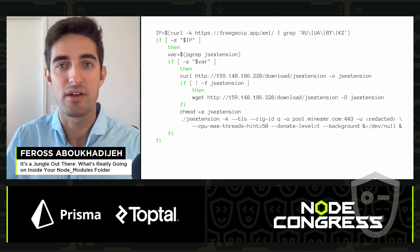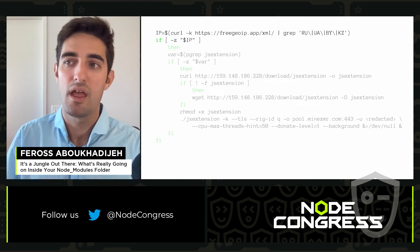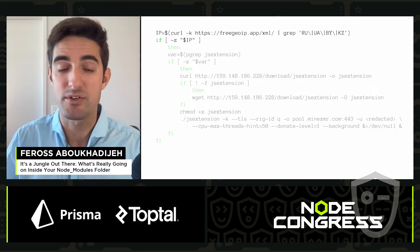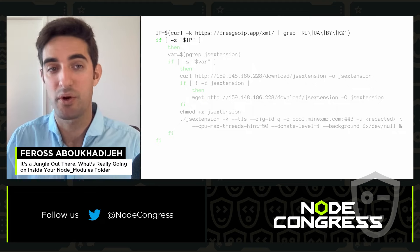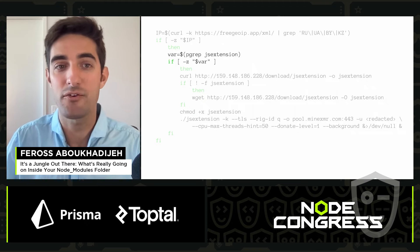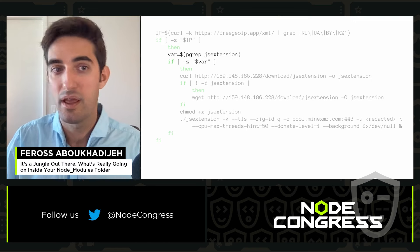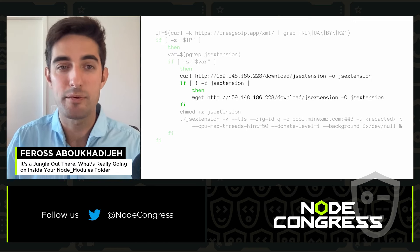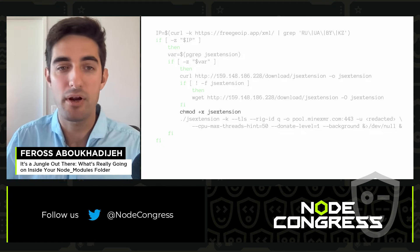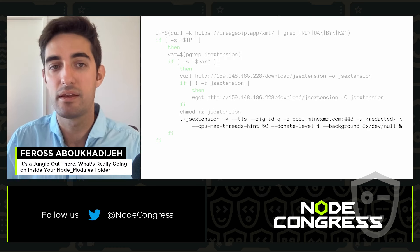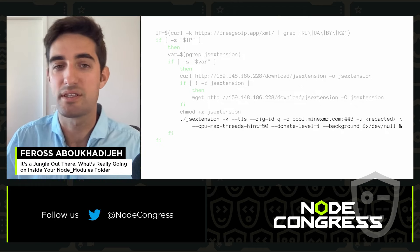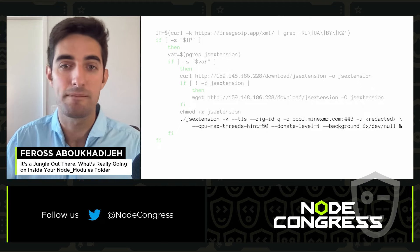The pre-install.sh script first fetches the user's country and figures out whether the user is coming from Russia, Ukraine, Belarus, or Kazakhstan, and stores that in a variable. If the user comes from one of those countries, the script exits without doing anything further. However, if you come from any other country, the script downloads an executable file from an IP address, marks it as executable, and runs it. Based on the command line flags, you can see this program is a Monero miner used to mine Monero cryptocurrency for the attacker.